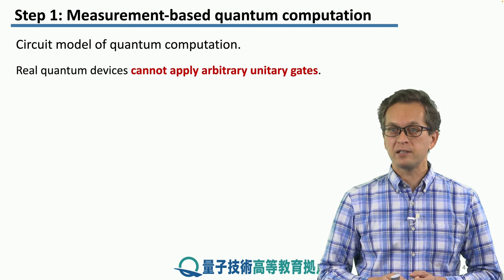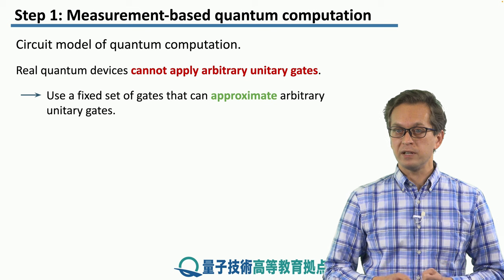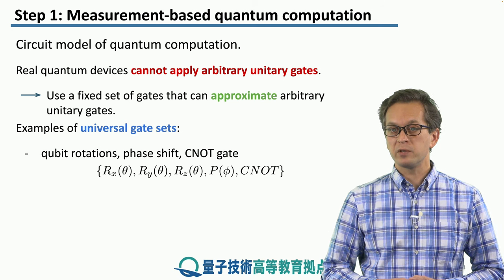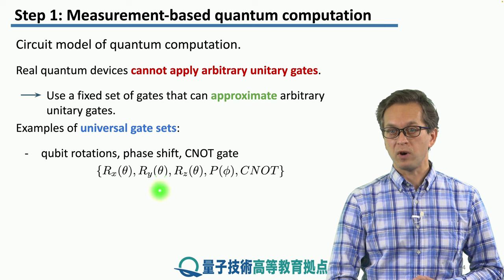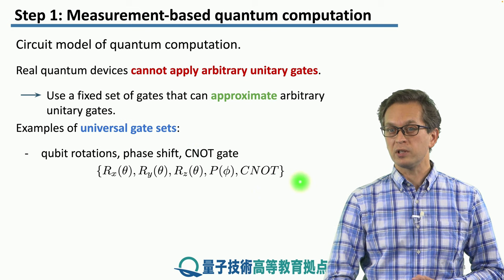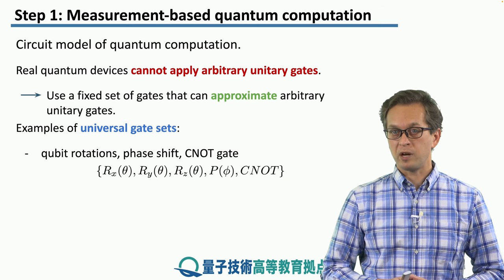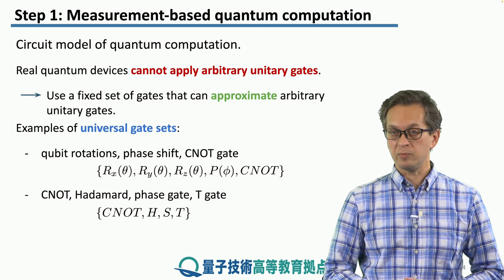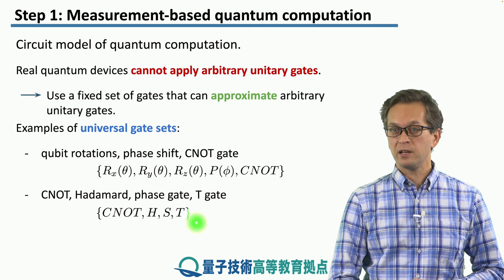But real quantum devices cannot apply arbitrary unitary gates. We have to be satisfied with using only a fixed set of gates that can approximate an arbitrary unitary gate. Examples of universal gate sets are the following. We can do rotations around the x, y, and z-axis, apply a phase gate with arbitrary phase phi, and as our two-qubit gate, we can take CNOT. If we're only allowed to do these operations, we can approximate an arbitrary unitary gate. And different sets of universal quantum gates we saw already in the previous lesson are given by the two-qubit CNOT, and then single-qubit Hadamard gates, phase gate, and a T gate.